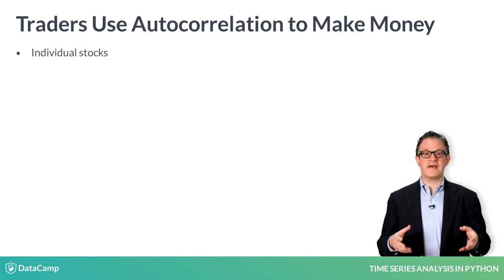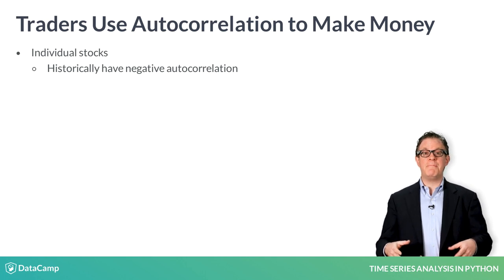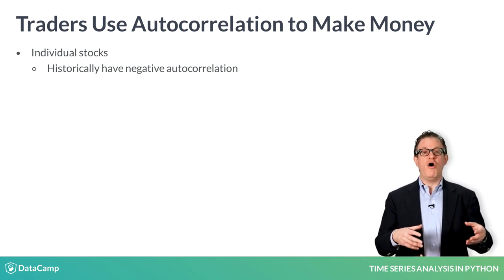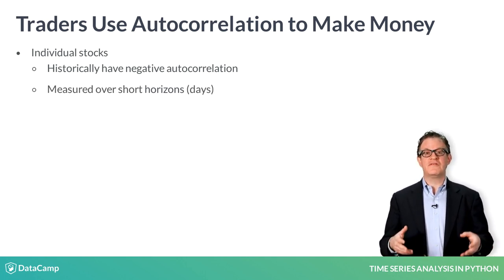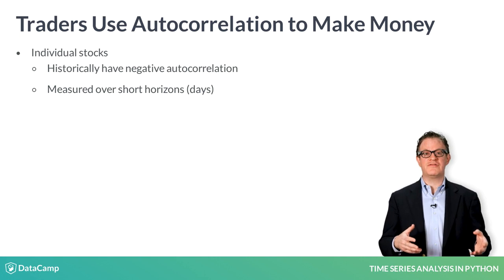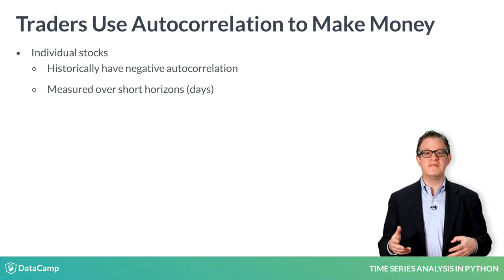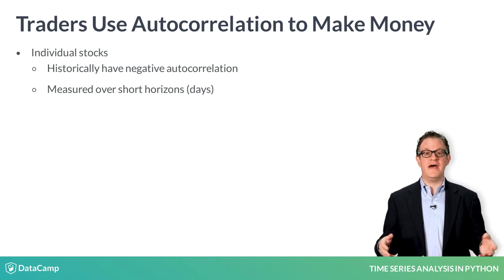For other assets like commodities and currencies, they have historically had positive autocorrelation over horizons of several months. So the typical hedge fund strategy there is to buy commodities that have gone up in the last several months and sell those that have gone down.